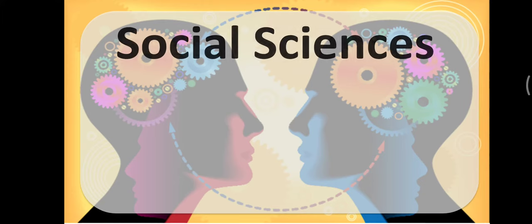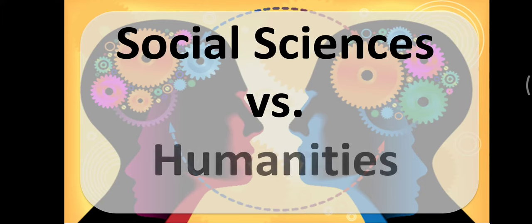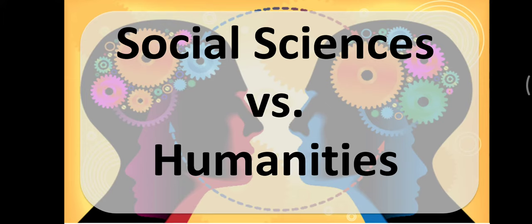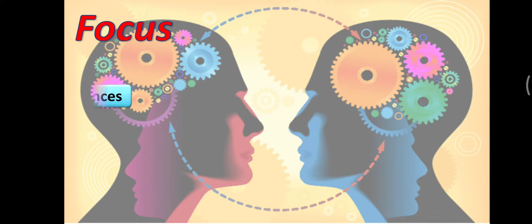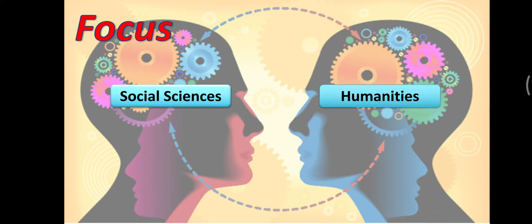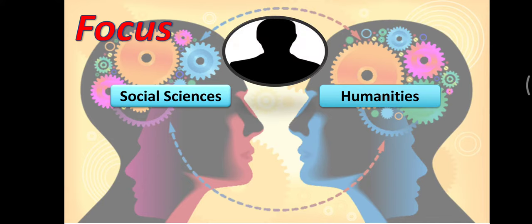Let's differentiate social sciences versus humanities. If you notice in the strand, they are combined—humanities and social sciences—but honestly, there is a distinction between the two. Let's see the focus of each one.